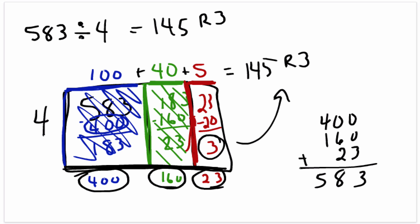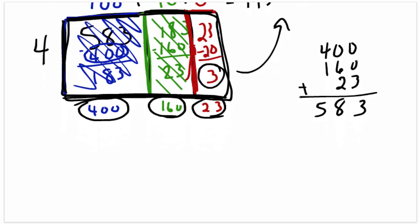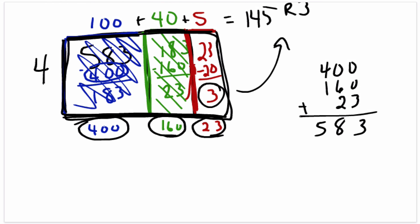Another way to check is we know that the width of the blue is 100, the width of the green is 40, and the width of the red is 5. So this total rectangle, the huge rectangle in total, has a width of 145 and a height of 4. So if we wanted to, we could do 145 times 4,